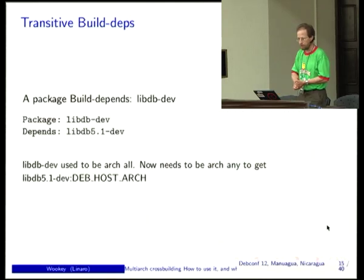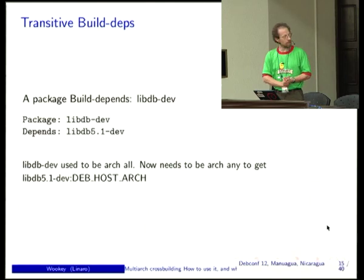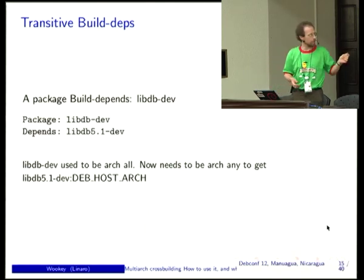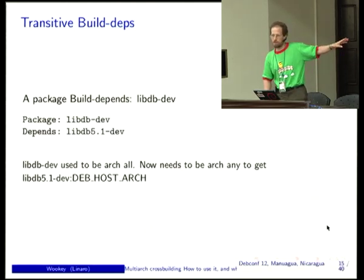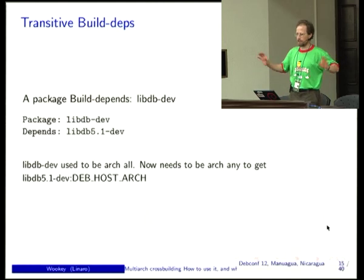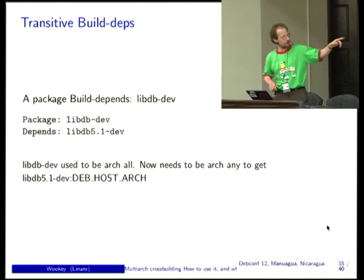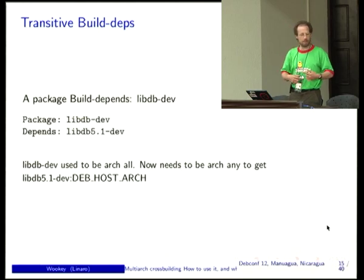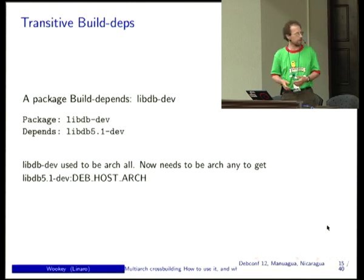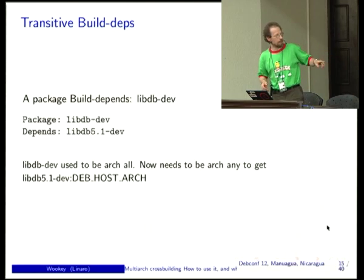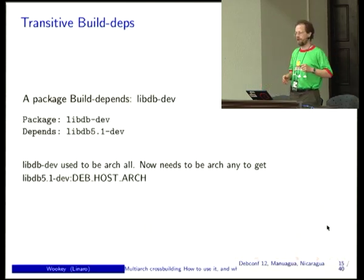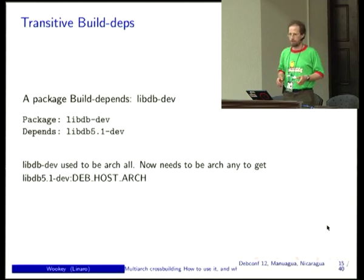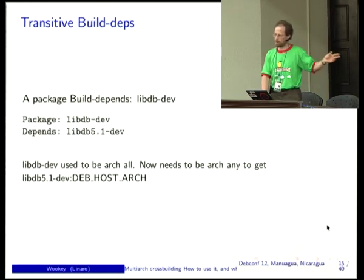Transitive build dependencies are another issue. Some versionless library dependency packages used to be arch:all, which breaks the multi-arch architecture chain — it doesn't know which architecture version of the library you wanted. For example, libdb-dev used to be arch:all, but we need to make it arch:any so it depends on the corresponding architecture version of the actual library. There are quite a few of these that are broken.